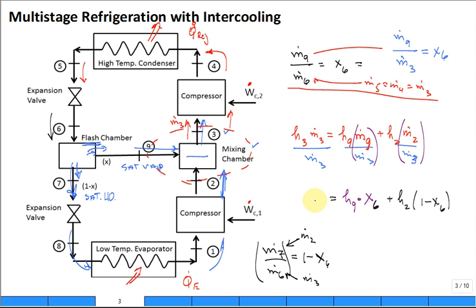So, to get the enthalpy at three, you use this equation. Where did it come from? Combination of mass balance and energy balance, but primarily energy balance. Agree? Good. The rest of it is straightforward in solving.